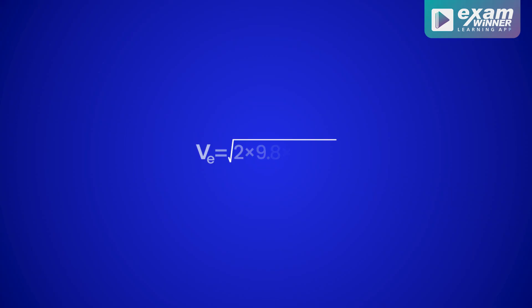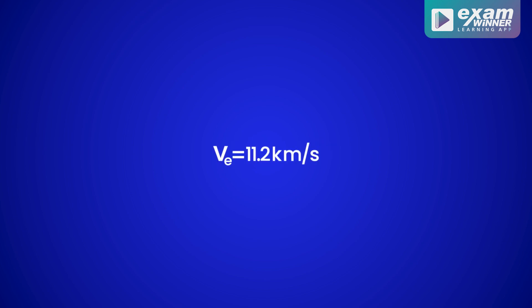Here g means acceleration due to gravity, which is 9.8 m/s². R means the radius of Earth, which is 6,400 km. Substituting these values, escape velocity v_e equals 11.2 km per second. That is the escape velocity expression and its numerical value.